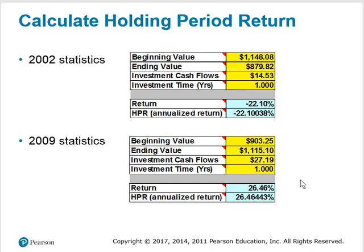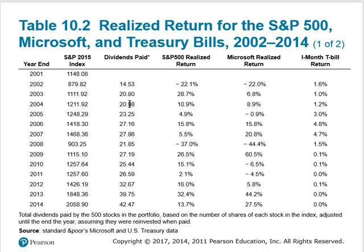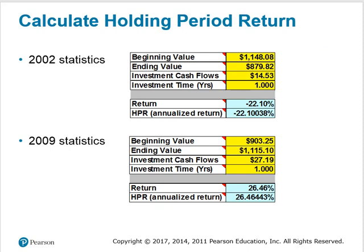Using the holding period return, we can calculate annual returns. You could also find the return from 2002 to 2009: the ending value would be 1115.10, the beginning value 1148.08, and the cash flows would be the sum of all cash flows between 2002 and 2009. You would then type in the investment time — 2009 minus 2002 equals seven periods — and that gives us the average rate of return over those seven years.